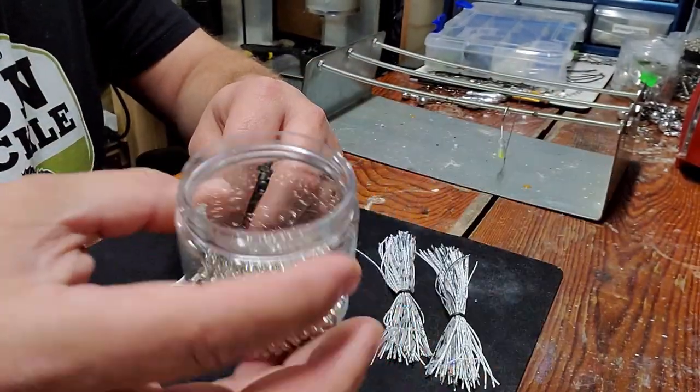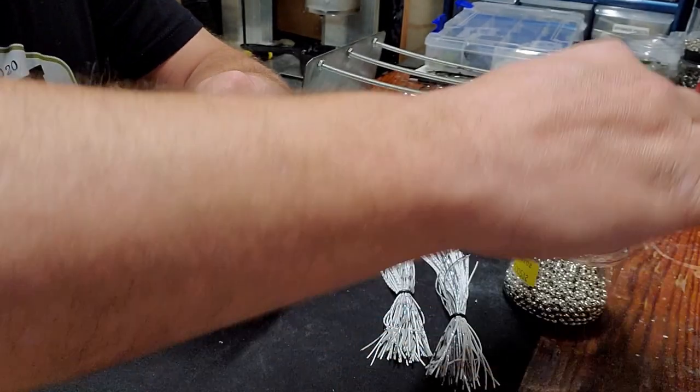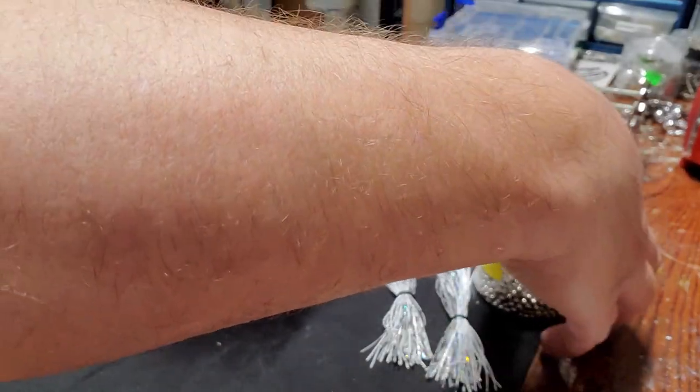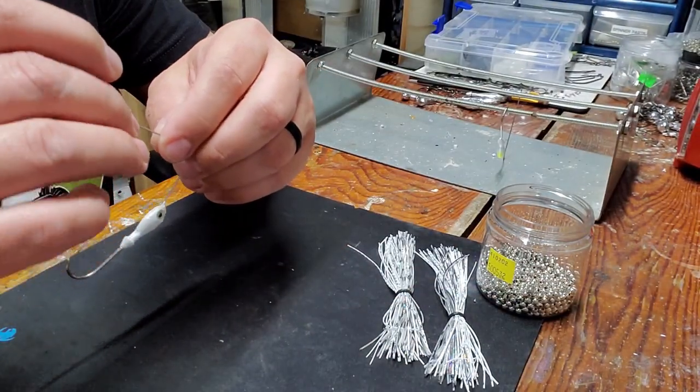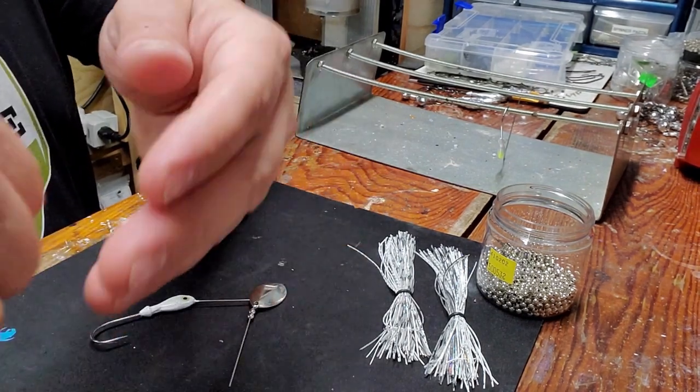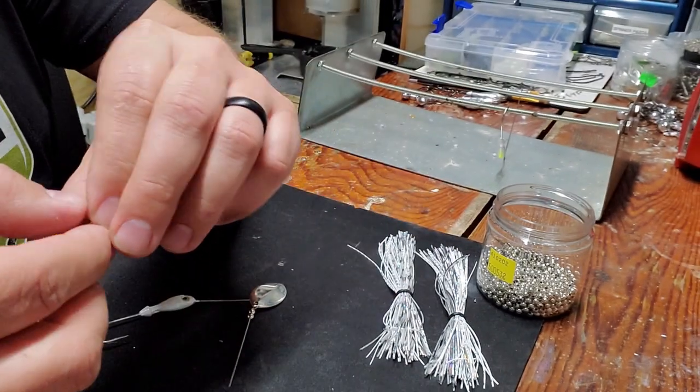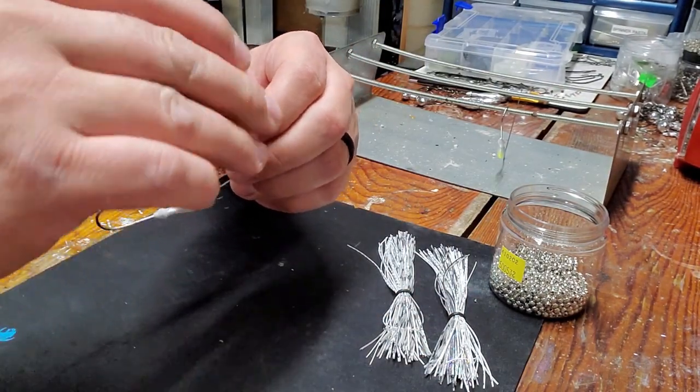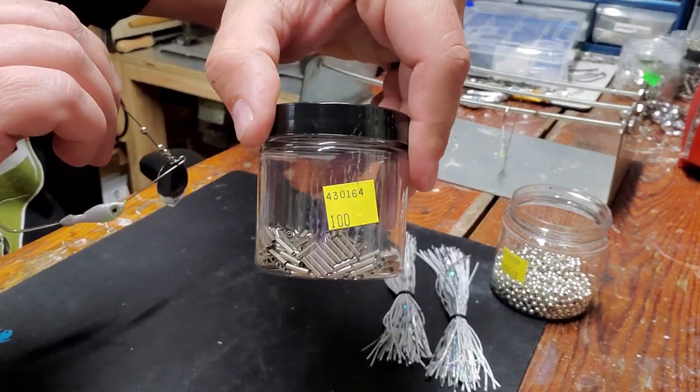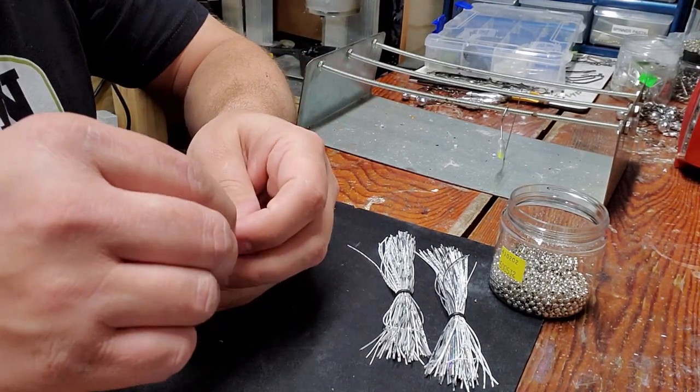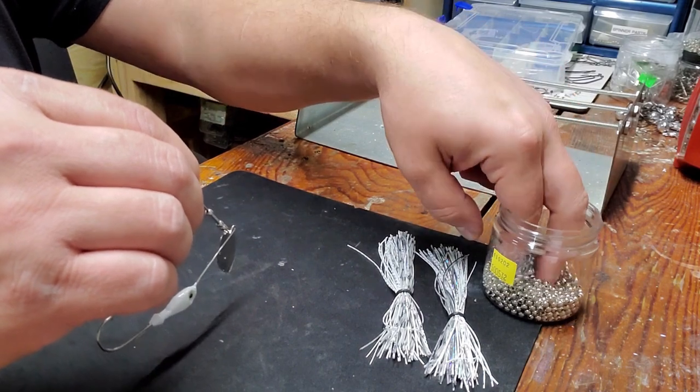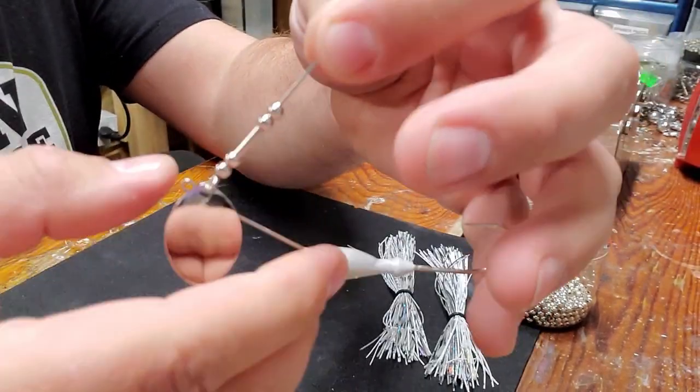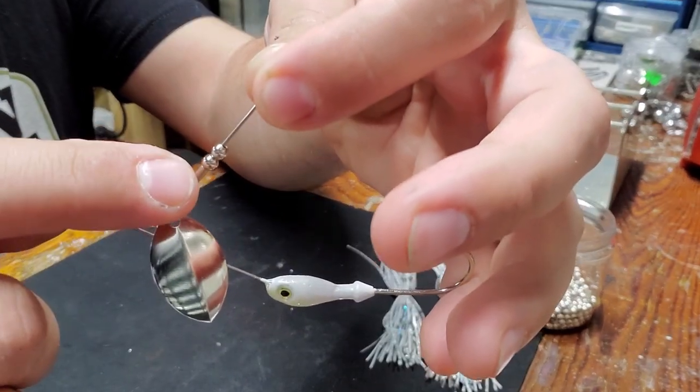So we're going to put that on first. Then we take some beads. These are also from Barlow's. That's the part number right there. I can't remember the clevis size, I want to say it's a size two or three, probably a three. We're going to put two beads on. Then we're also going to put a spacer. These are medium size beads. We're going to put two beads, then a spacer, then two more beads. Let me show you the spacer part number right there. That's all in Barlow's. I'll link everything in the description below.